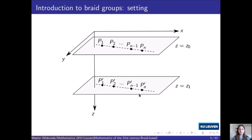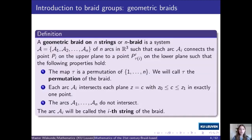Eventually the strings of the braid will connect these points to each other. But before we move on to that, I just want to clarify that we obviously have some freedom in how we choose these planes and these points. But once we have chosen them, they stay fixed. And you will see from the theory that follows that indeed it doesn't really matter how they are chosen specifically. So in the setting that I just showed you, we define a geometric braid on n-strings.